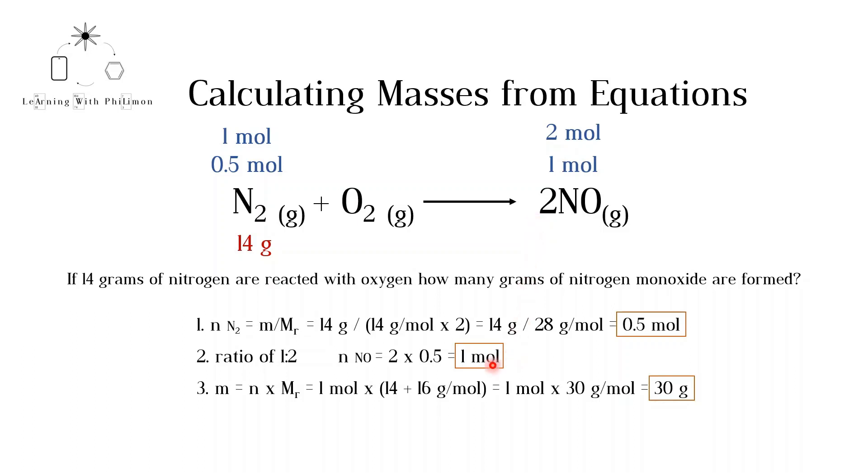The third step is to determine the mass of nitrogen monoxide formed. This can be done by multiplying the moles by the molecular mass. The molecular mass of nitrogen monoxide is equal to the atomic mass of nitrogen plus the atomic mass of oxygen. A common mistake made when calculating the molecular mass is multiplying the atomic masses by the coefficient. Only the molecular formula NO in this case should be considered. The calculation gives us that 30 grams of nitrogen monoxide are formed when 14 grams of nitrogen are reacted with oxygen.